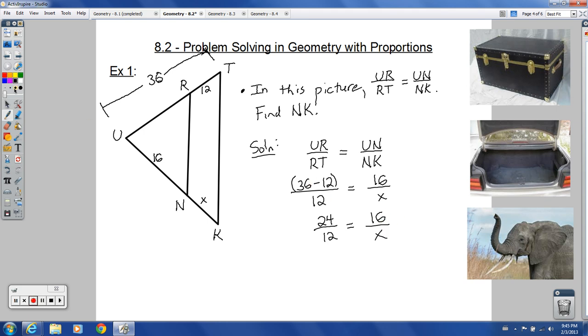This becomes twenty-four over twelve equals sixteen over X. Let's show cross multiplication. Twenty-four times X is twenty-four X. Twelve times sixteen, that would be one ninety-two. From that point, you would divide by twenty-four to get X equals one ninety-two divided by twenty-four is eight. And X is the same thing as NK, which is what we wanted to find. So NK is equal to eight.